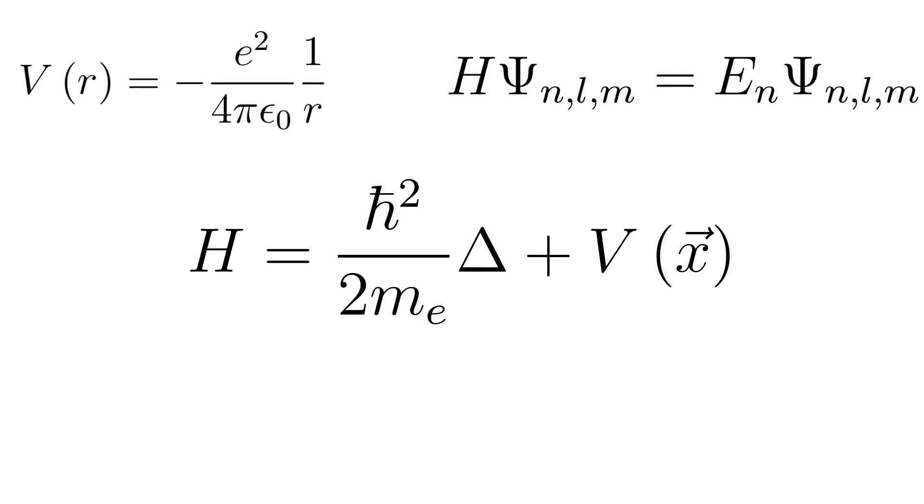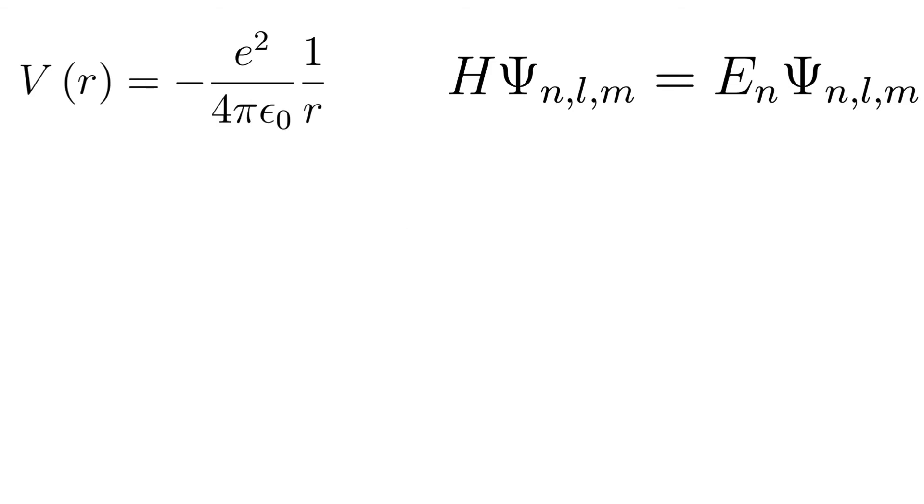And the energy eigenvalues en equals minus r times 1 over n squared, where r is the Rydberg constant. In psi nlm you can find the spherical harmonics as well as a radial part rnl. psi nlm of r theta and phi equals ylm of theta and phi times rnl of r.